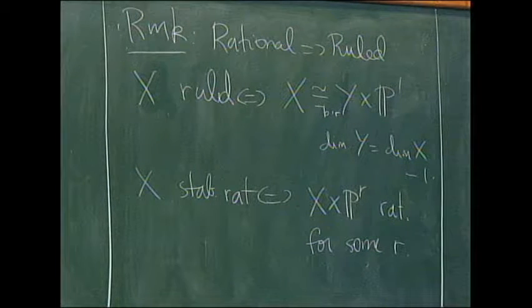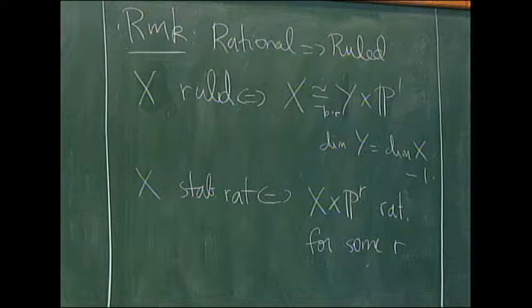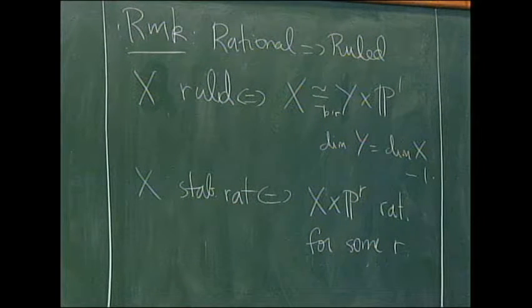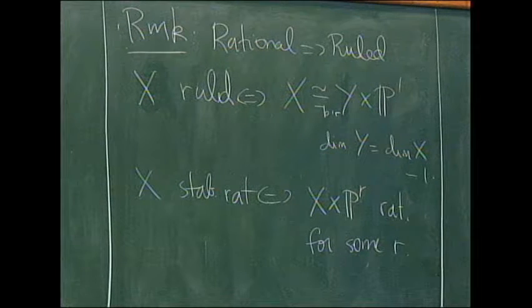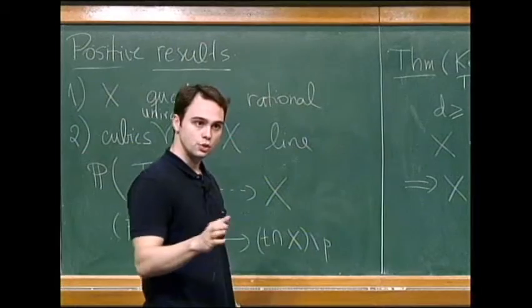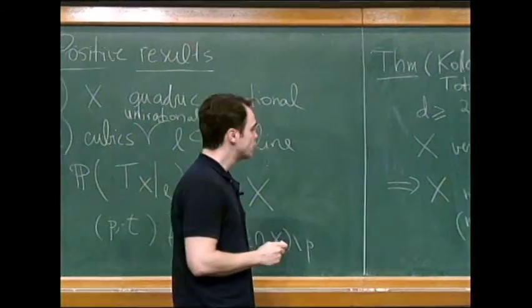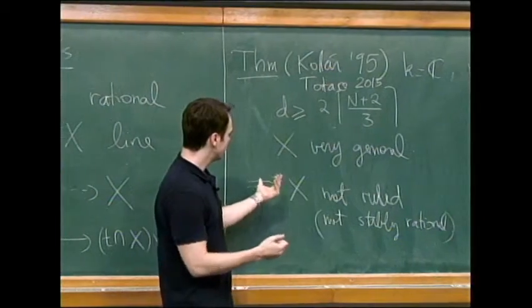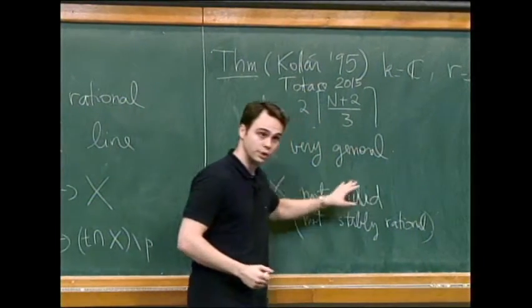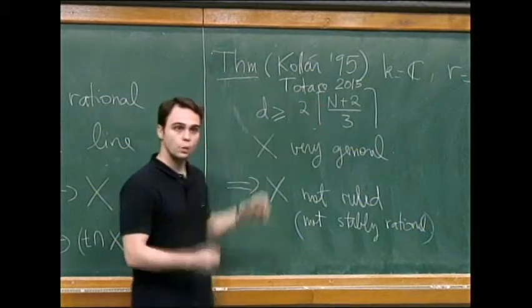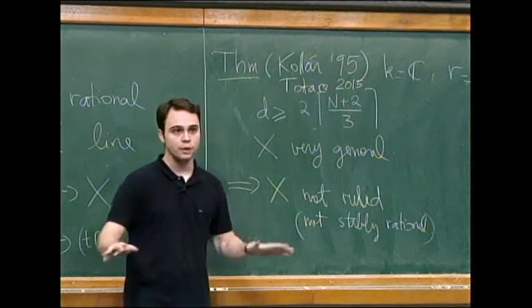And you could ask, so is it true for all smooth hypersurfaces? We know it's true for the very general one. The fact is, it is not known if it holds for the general one. So certainly don't have any counterexamples. A counterexample would be, at least for the statement with rational here, a counterexample would be to find a high degree hypersurface which is rational. But we have no such examples from degree four onwards.